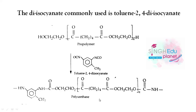To the pre-polymer, we add toluene 2,4-diisocyanate, which combines with the pre-polymer to form a polyurethane. Draw the structure carefully in your notebook to understand the arrangement.